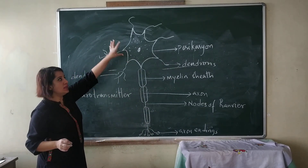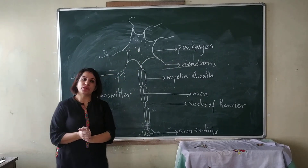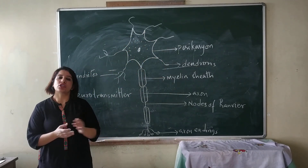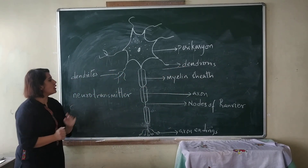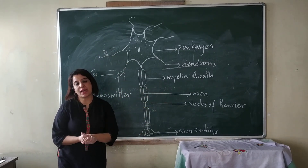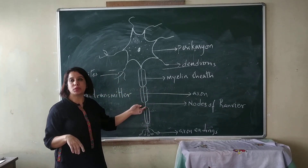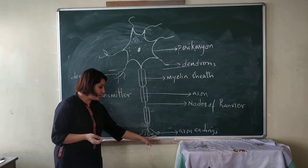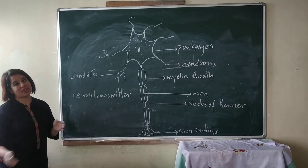So to summarize: the neuron consists of a cell body called pericarion, containing cytoplasm and a centrally located nucleus. Arising from the cell body are short thread-like protoplasmic projections called dendrons, which branch into dendrites. One long projection is called the axon, covered by myelin sheath with gaps called nodes of Ranvier. The axon ends in bulge-like structures called axon endings, filled with chemicals called neurotransmitters.